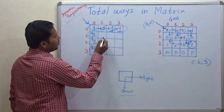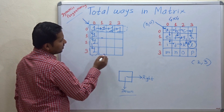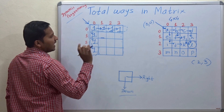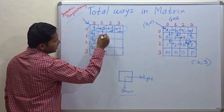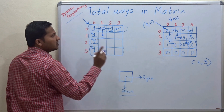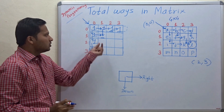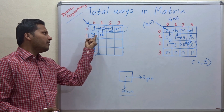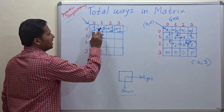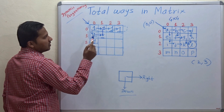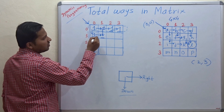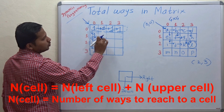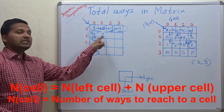Now let's start solving from cell 1,1 — this 3x3 submatrix. For cell 1,1, as you can observe, you can come from the upper cell or from the left cell. There are two paths. How many number of ways are there to reach these two cells? The upper cell has one way and the left cell also has one way, so we add the number of ways: 1 plus 1 equals 2. Total there are two ways to reach this cell.